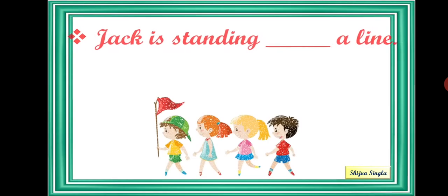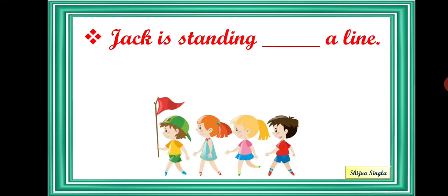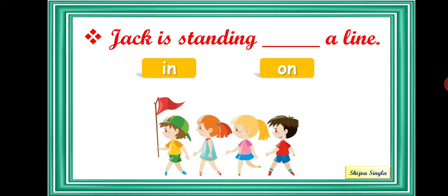The first sentence is: Jack is standing dash a line. Options are in and on. The correct one is in. Jack is standing in a line, because Jack is already standing over there.